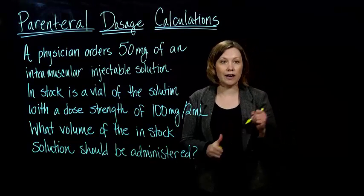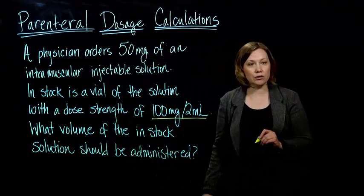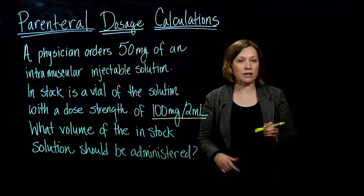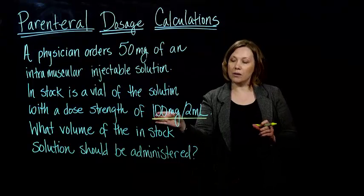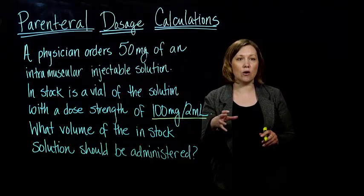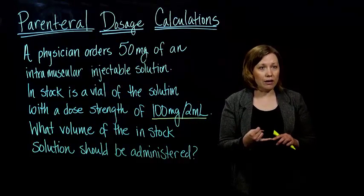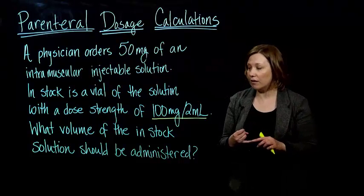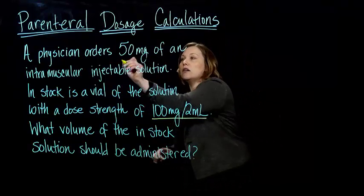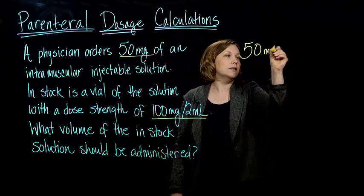I'm going to make my conversion factor based on the on-hand dose — what medicine I have. I have 100 milligrams per 2 milliliters, and I can put the milligrams on the top of my conversion factor, or I could put it on the bottom. I want to ask myself: what do I want to end up with? Well, I want to end up with volume — milliliters. And the doctor ordered 50 milligrams, so that's what I'm going to write down: 50 milligrams.